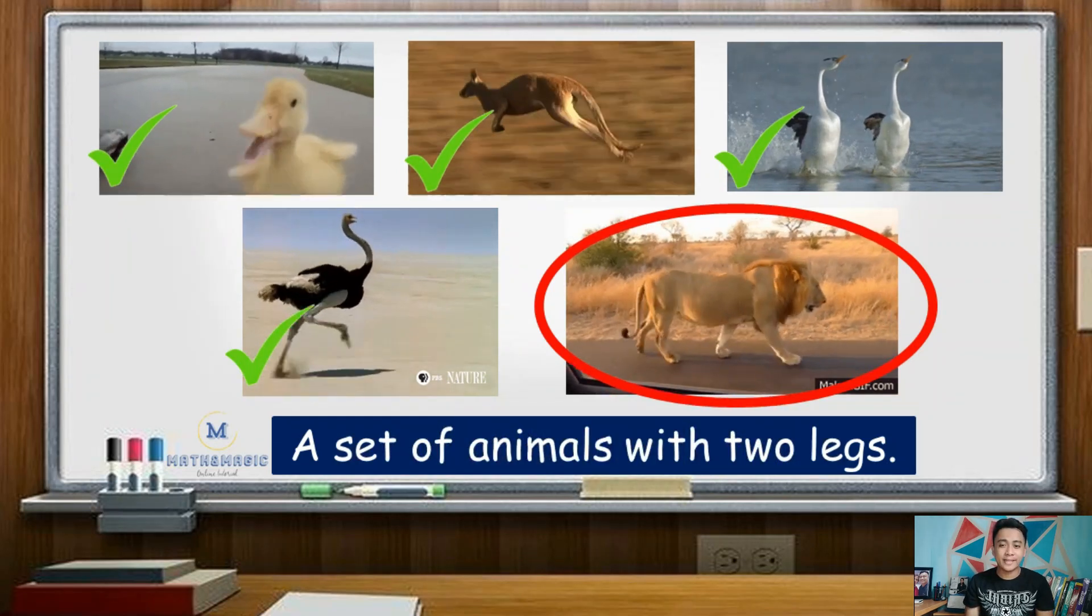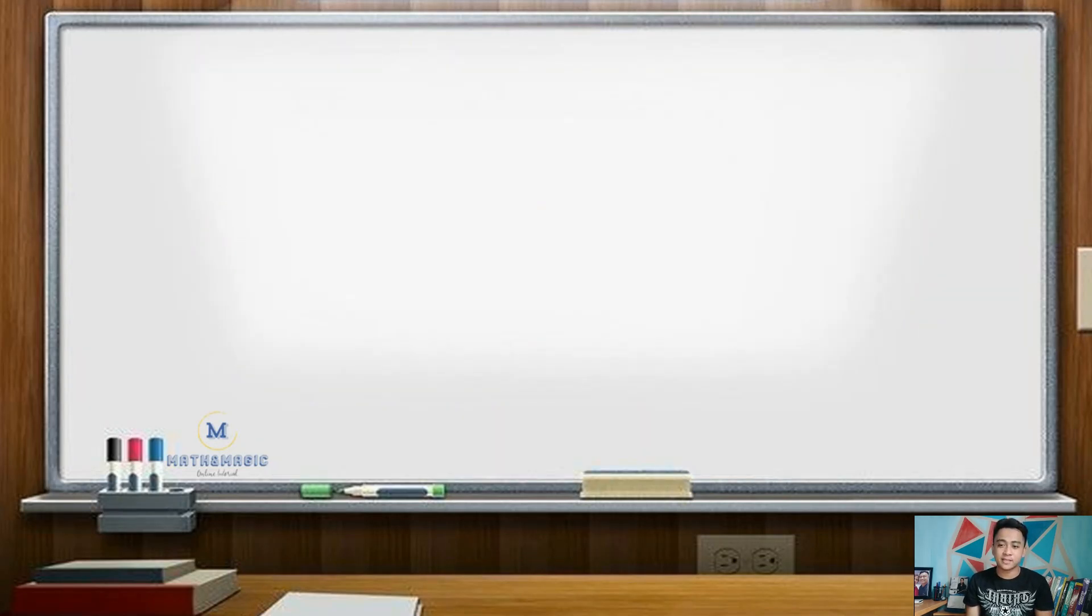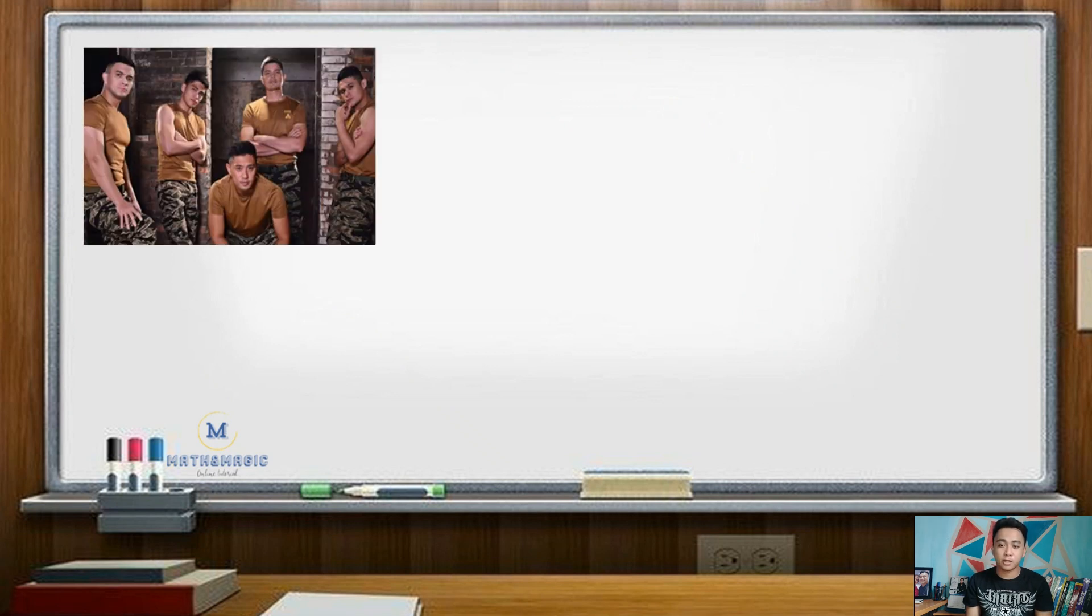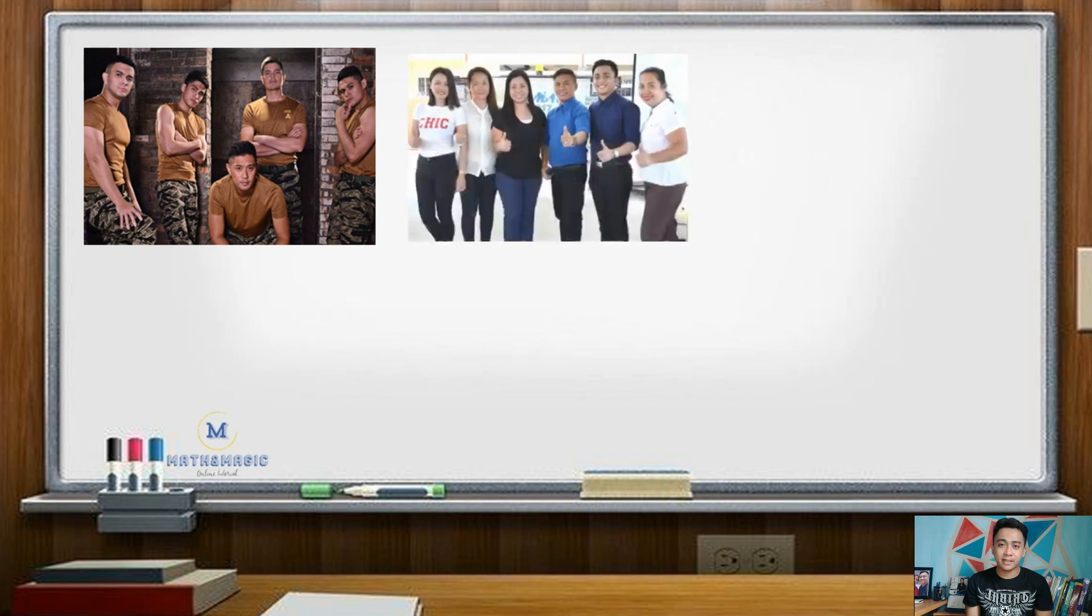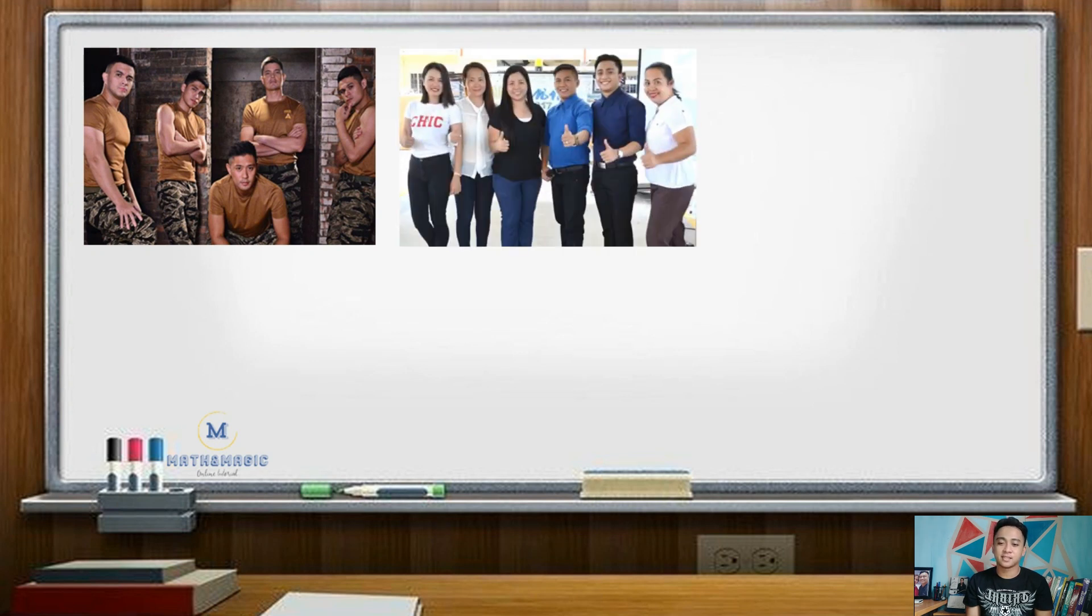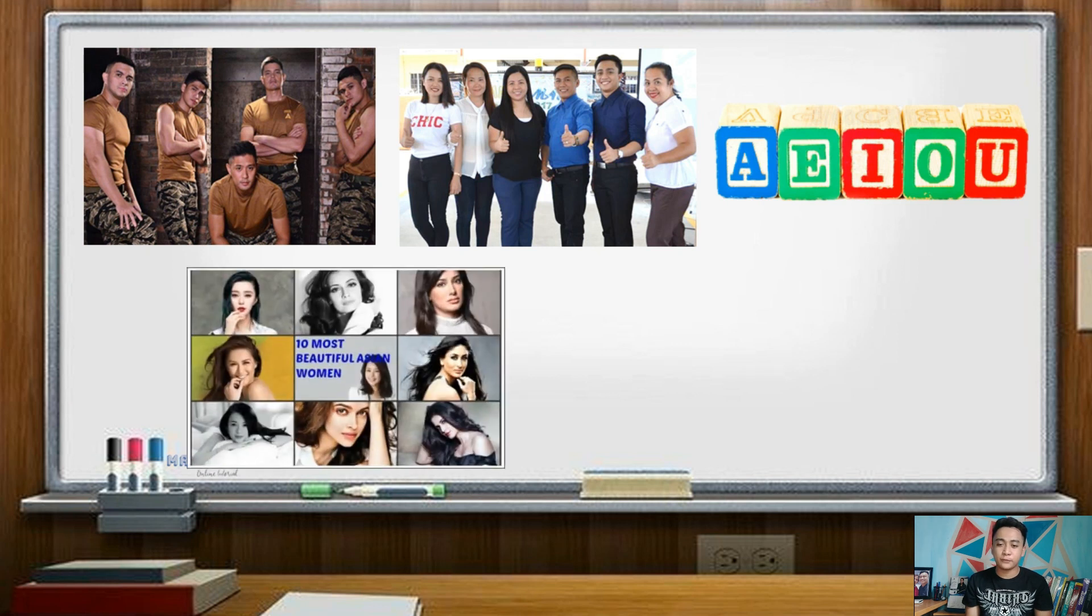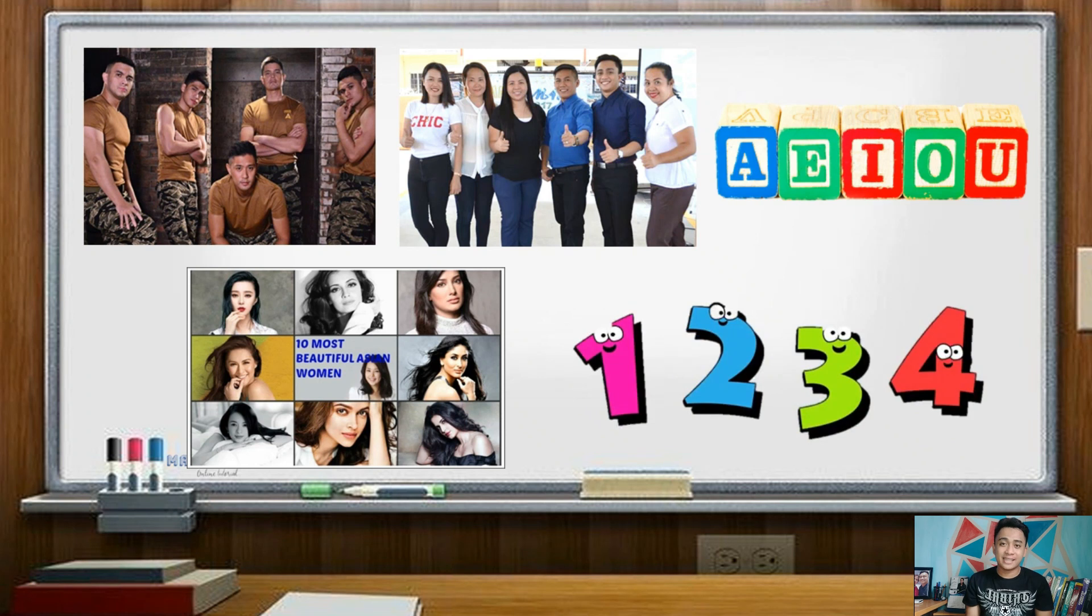Now, can you identify which of the following sets are well-defined? We have set of popular actors, set of math teachers in HRS, set of vowel letters, set of beautiful women in Asia, and set of positive integers less than five.